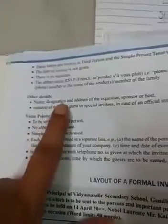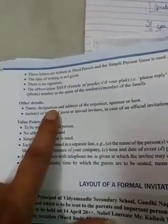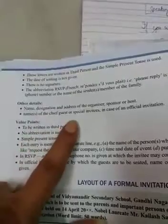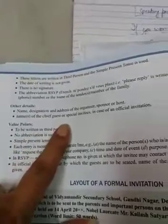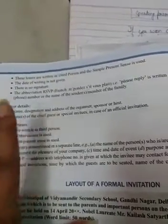Other details about this invitation include: name, designation, and address of the organizer, sponsor, or host; and the name of the chief guest or special invitees in case of an official invitation. Now we have discussed the layout of the formal invitation and how we can write a formal invitation.